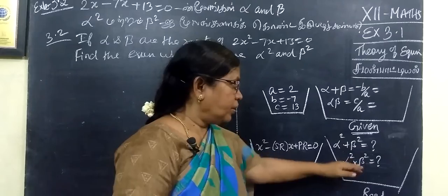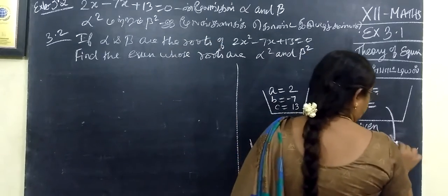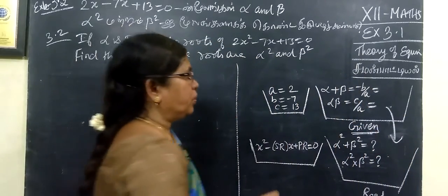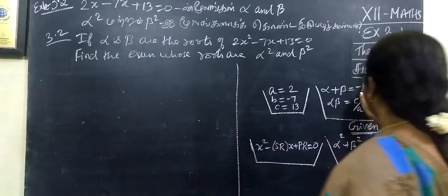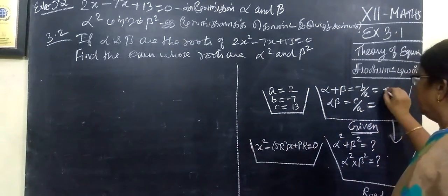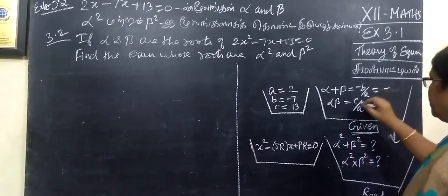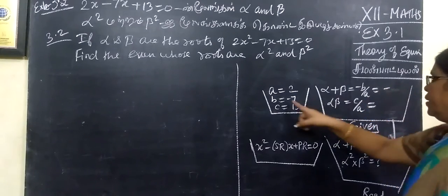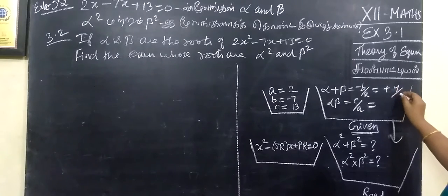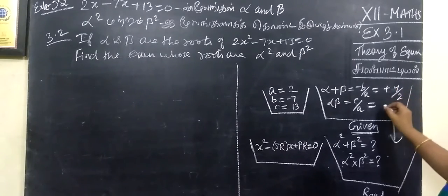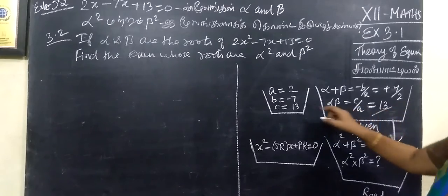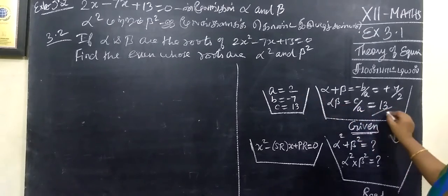We will find those values and substitute. We know sum of the roots is minus b by a, and product of the root is c by a. This is minus b over a. There is already a minus, so it becomes plus: 7 by 2. Then c by a — c is 13, a is 2, so product of roots is 13 by 2.